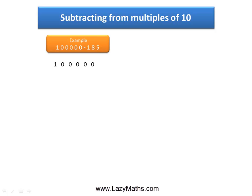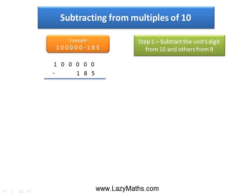The first thing you do is write down the numbers 100,000 minus 185. And then, as step one suggests, subtract the last digit from 10 and the remaining from 9.